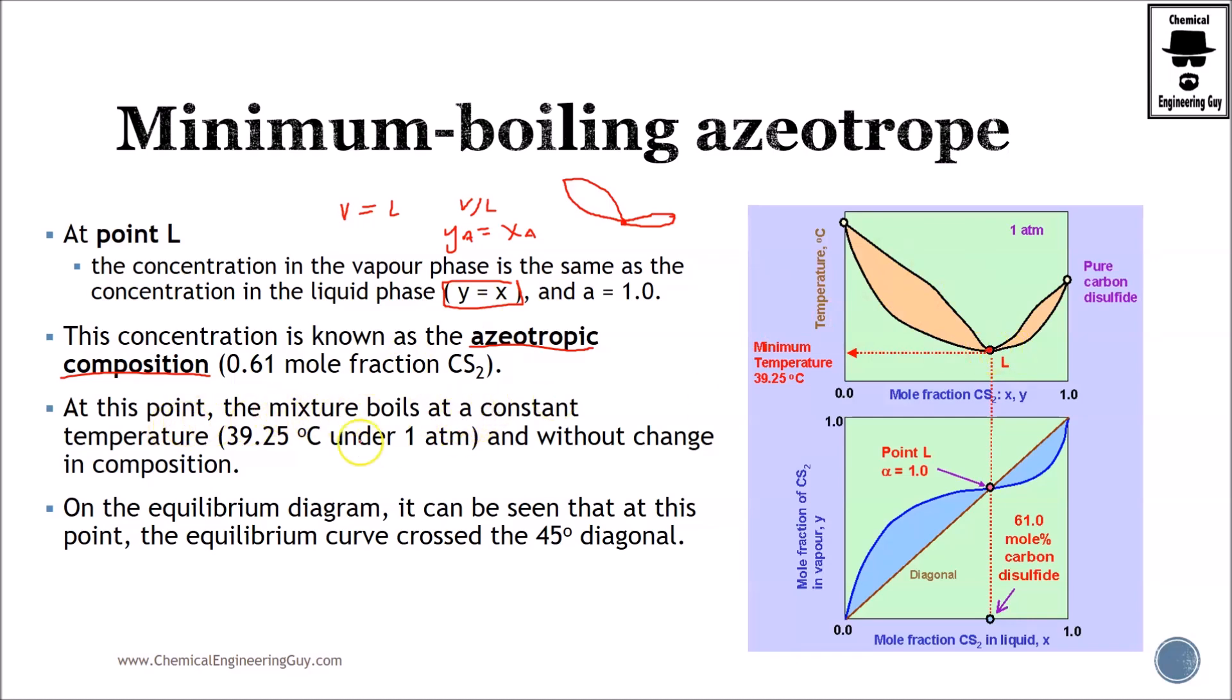At this point, the mixture boils at a constant temperature. That's also very important. We will not be able to change that. The only thing that we can do is either pressurize it or add another external ingredient to favor the change or shift of the azeotrope.